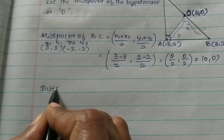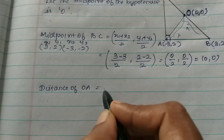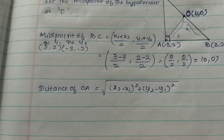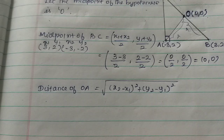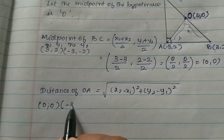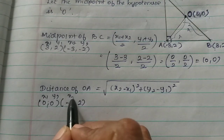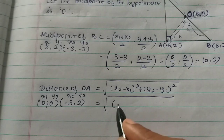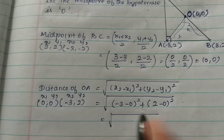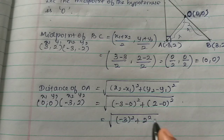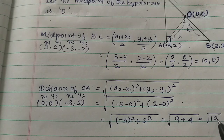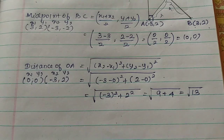Distance OA: O is (0,0) and A is (-3,2). Using the distance formula √[(x2-x1)²+(y2-y1)²], we get √[(-3-0)²+(2-0)²] = √[(-3)²+2²] = √[9+4] = √13.